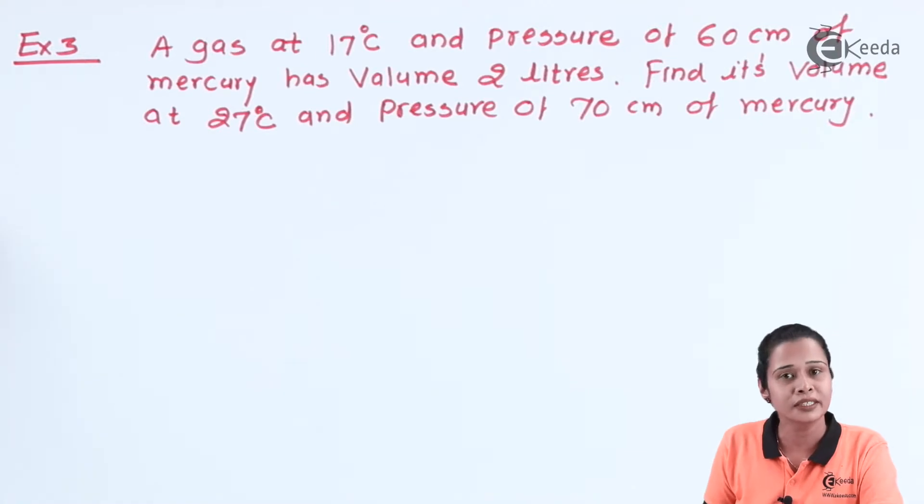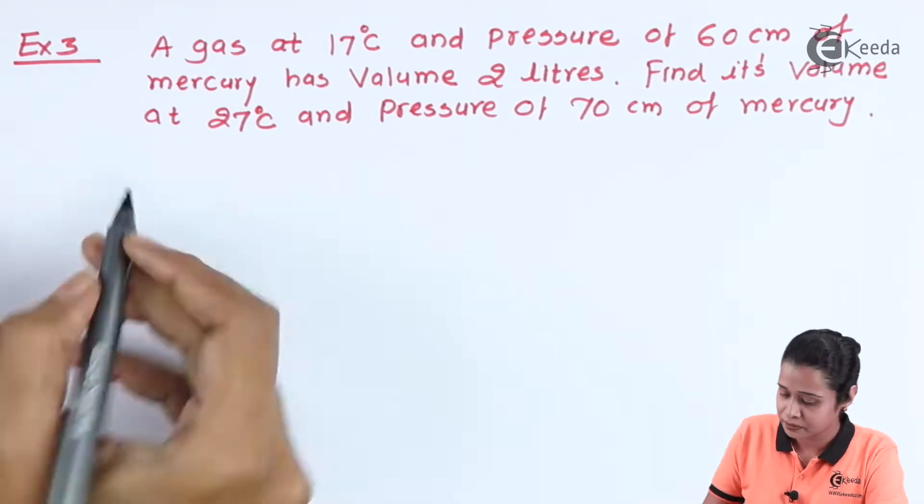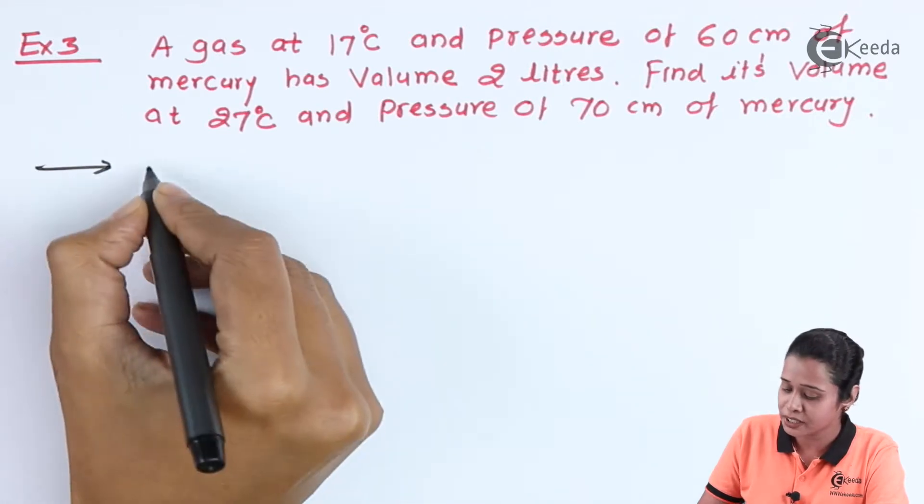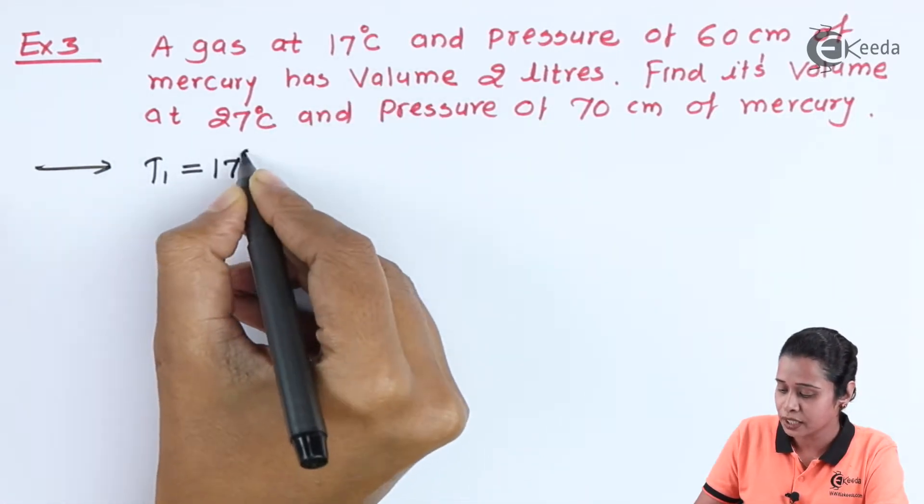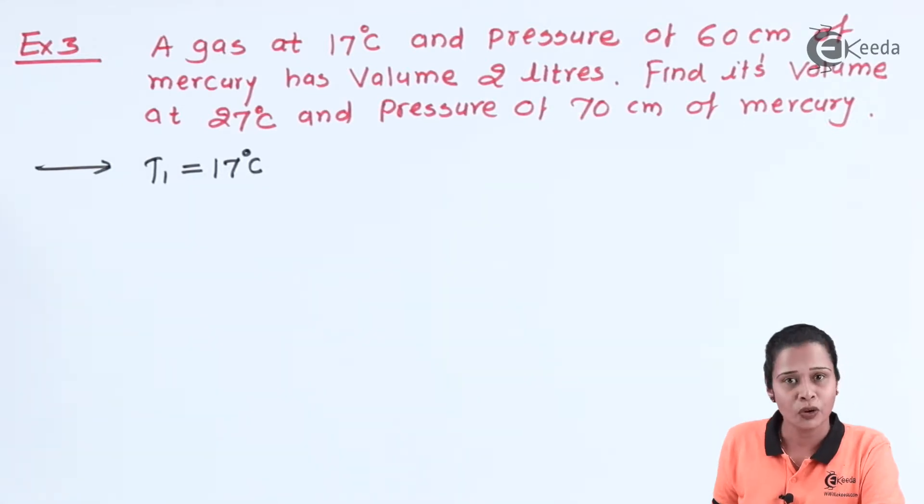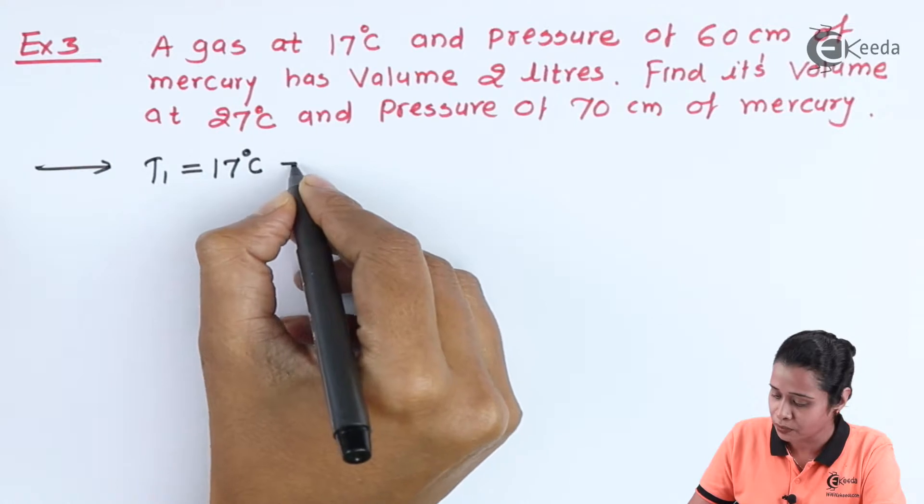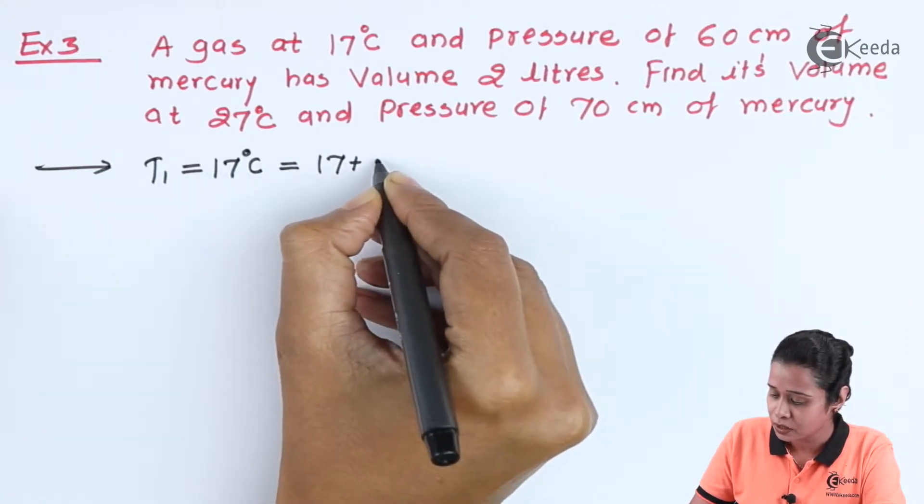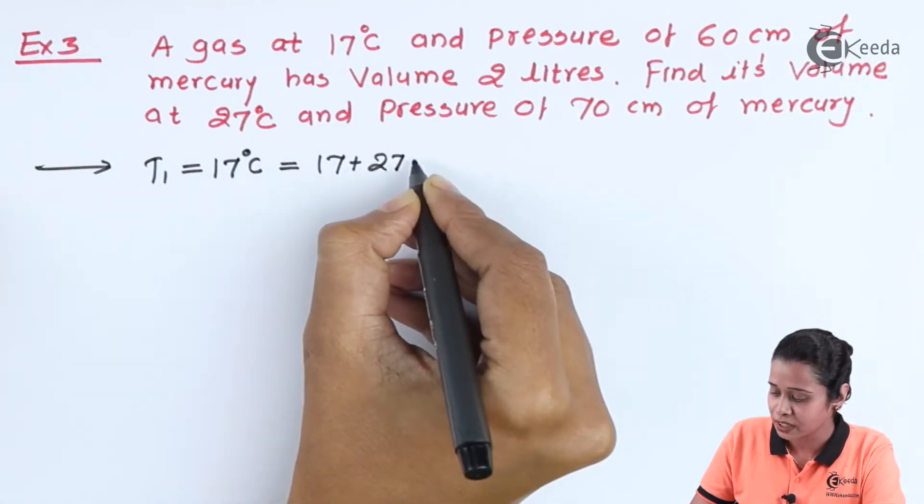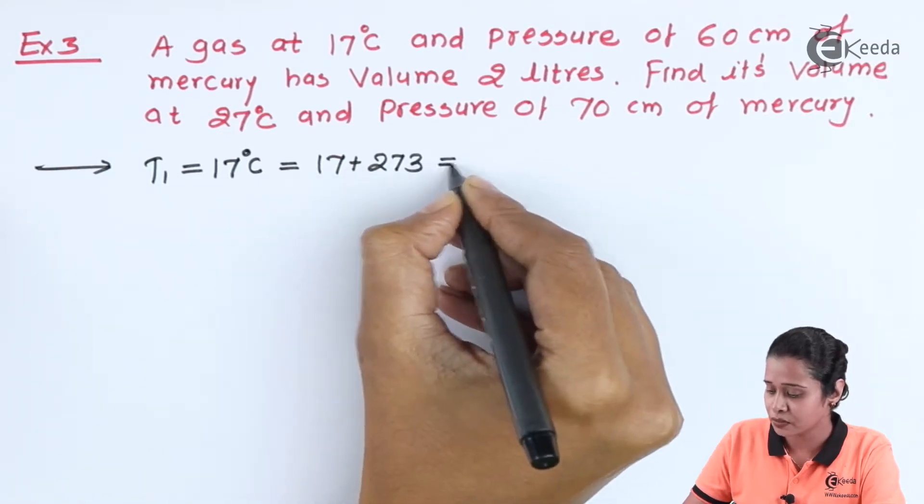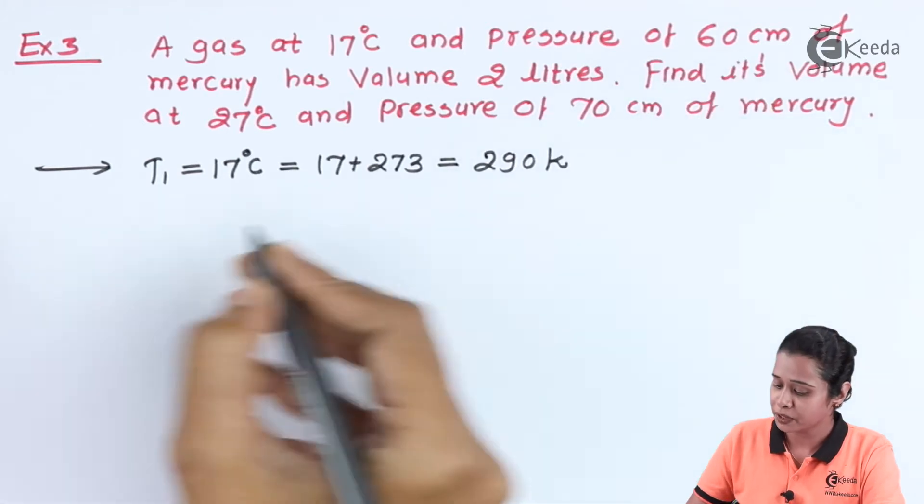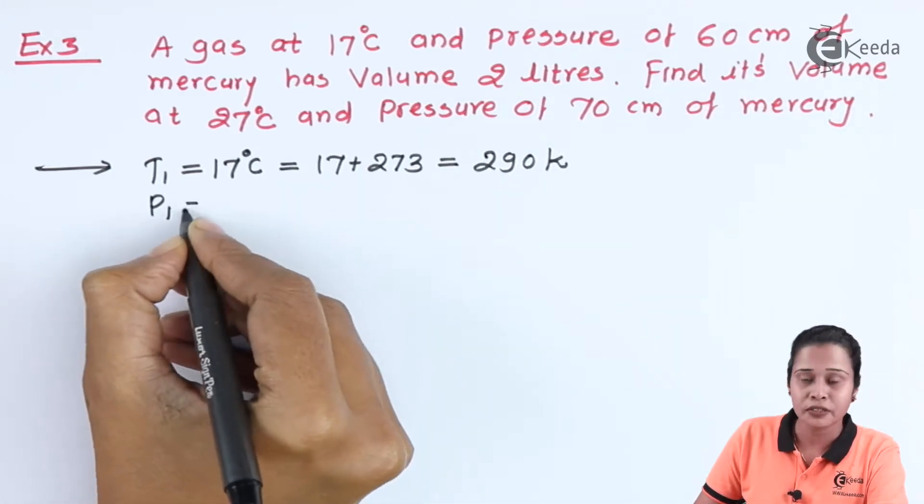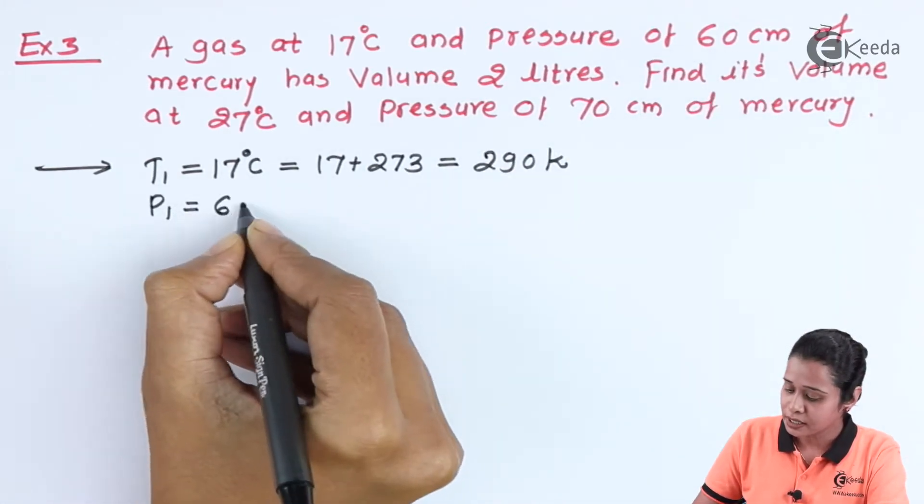Let us start with the given quantities. Here, initial temperature T1 is equal to 17 degrees Celsius. We have to convert this temperature into Kelvin, so here we have 17 plus 273 which is equal to 290 Kelvin. Now, pressure P1 is given which is equal to 60 cm.